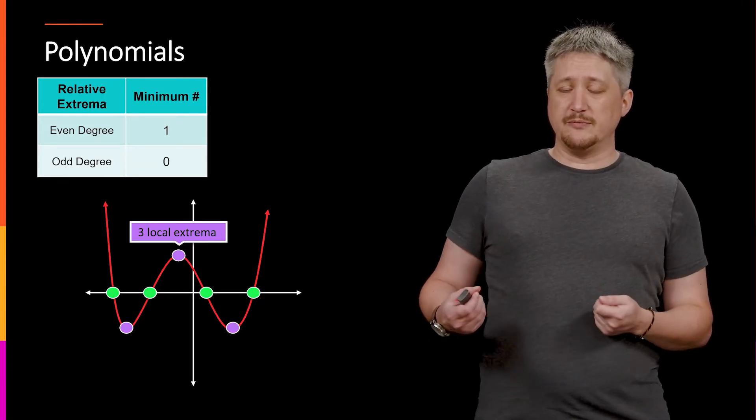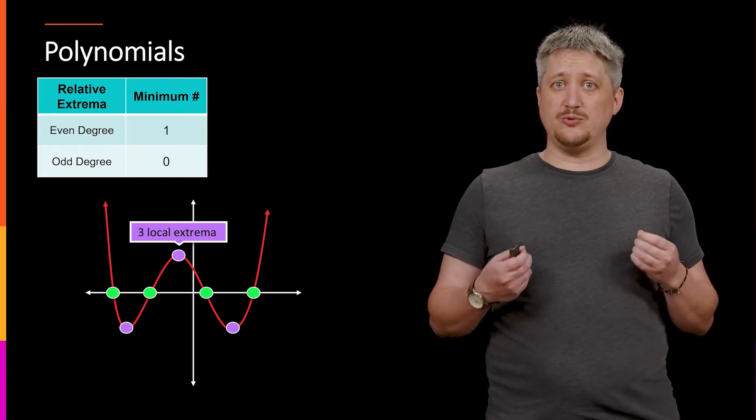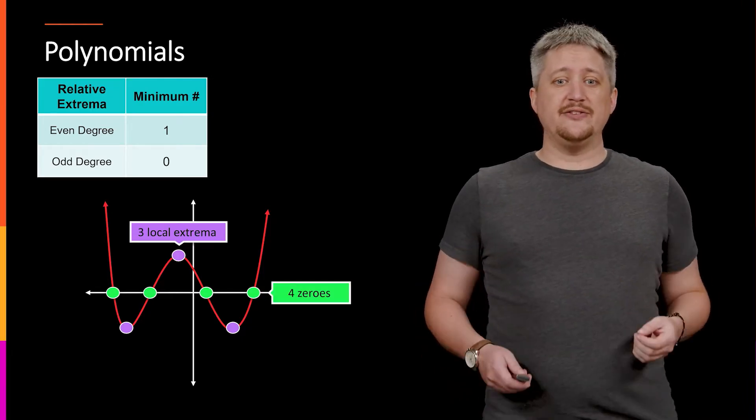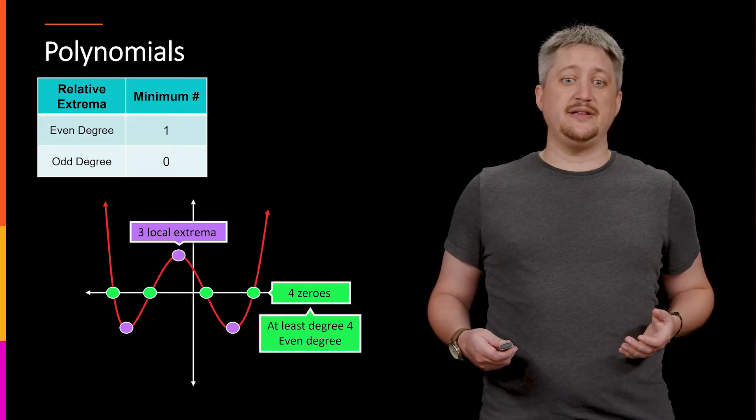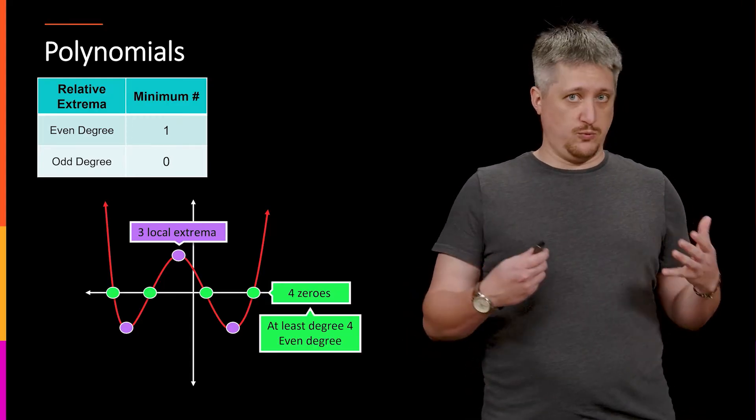Well, if you remember from the fundamental theorem of algebra, those four zeros correspond to a factor each. And so it turns out that these four zeros mean that we have to have a degree at least four, which is even.